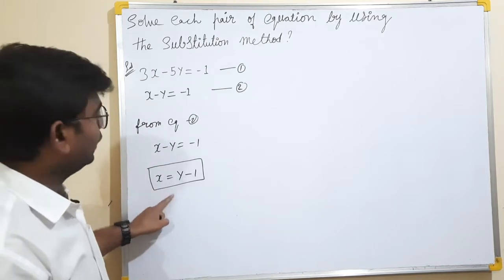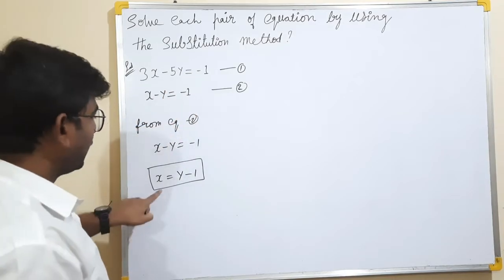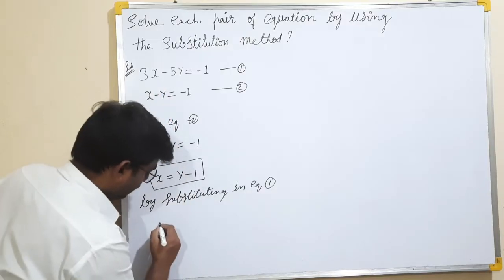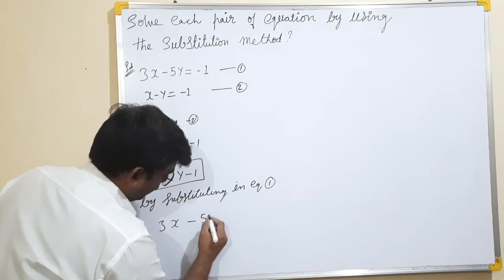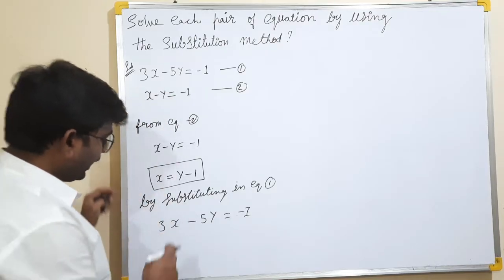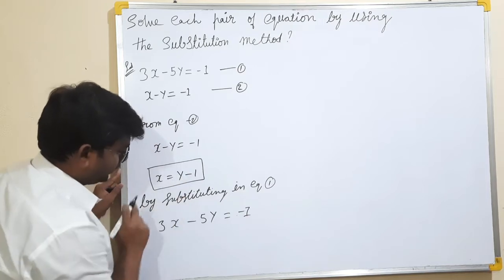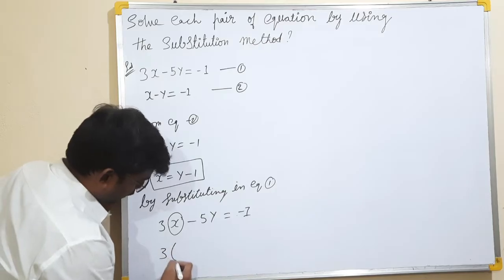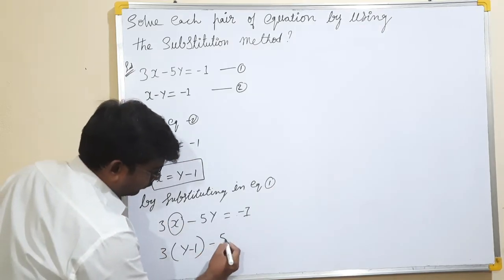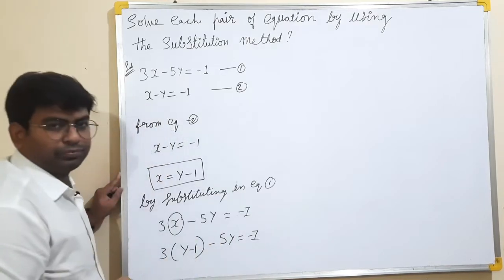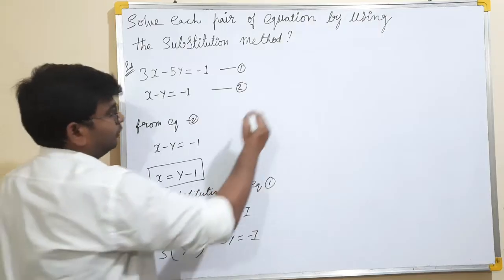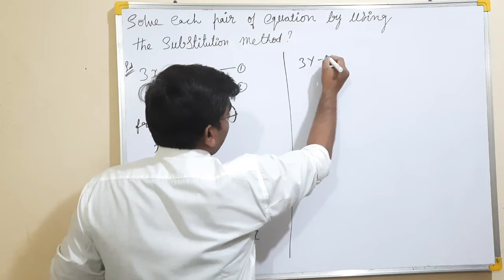Now we substitute this into equation 1. In equation 1, 3x minus 5y equals to minus 1. In place of x, we have y minus 1. So 3 into (y minus 1) minus 5y equals to minus 1. That gives 3y minus 3 minus 5y equals to minus 1.